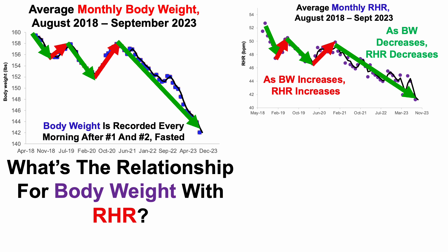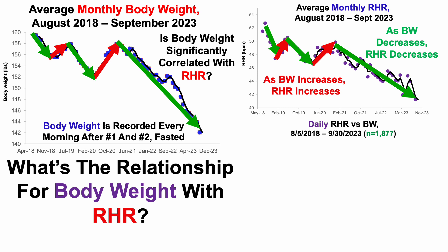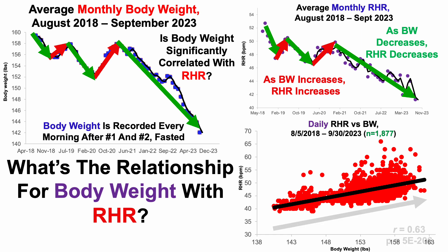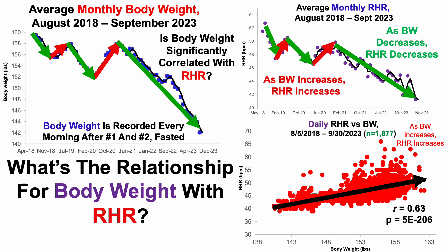Rather than just looking at two plots for similarities, is there a direct correlation? Is body weight significantly correlated with resting heart rate? With about 1,900 days of data, looking at daily resting heart rate versus body weight, we can see a significant positive correlation — as body weight increases, that's significantly correlated with a higher resting heart rate. Conversely, as my body weight has approached 142 pounds, the resting heart rate has approached lower values around 41 beats per minute. What will happen if I'm able to get even leaner? We may start to see a resting heart rate of 40 or below — stay tuned for that in future videos.